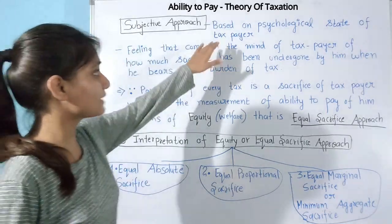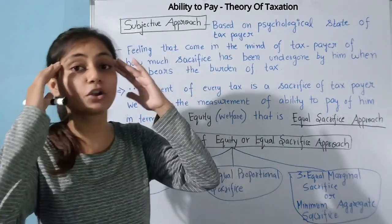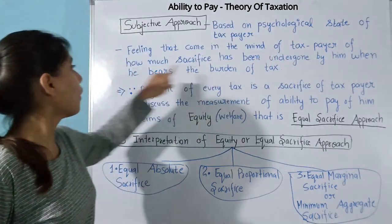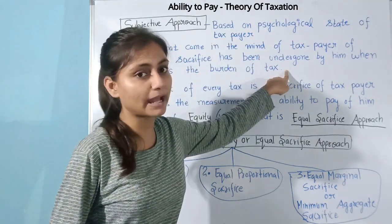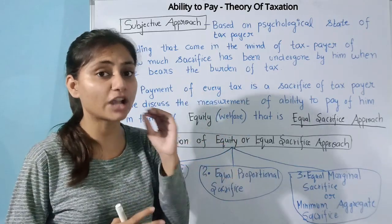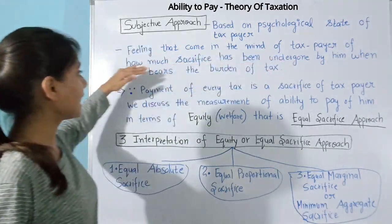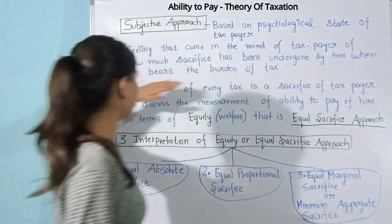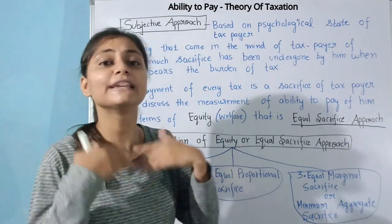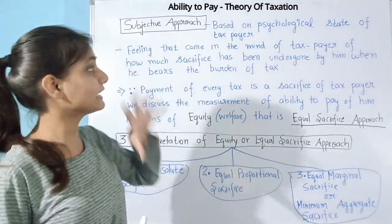Let's first discuss the subjective approach. The subjective approach is based on the psychological state of the taxpayer — that is, the feeling that comes in the mind of the taxpayer about how much sacrifice has been undergone when bearing the burden of tax. After paying tax, the feeling that comes — whether it was just or not — that is what the subjective approach talks about.